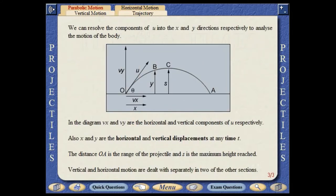We can resolve the components of the initial velocity into the X and Y directions respectively to analyse the motion of the body. Doing this allows us to consider the vertical and horizontal motion separately.